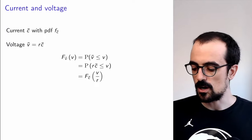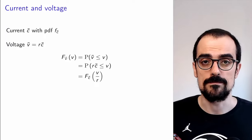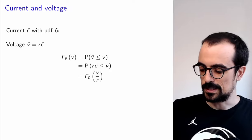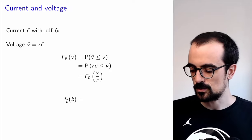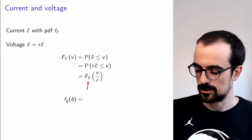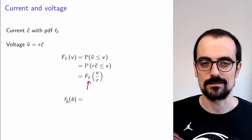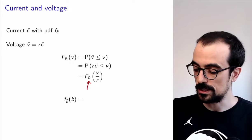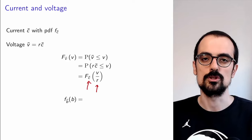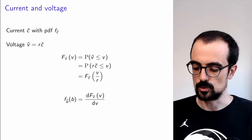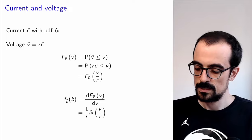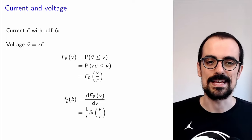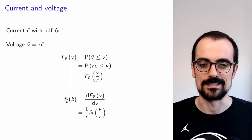Now if we want the PDF of V, what do we do? We differentiate. If we differentiate, we have to apply the chain rule — the derivative of the CDF is just the PDF, and we also differentiate whatever is inside, so a factor of 1/R comes out. And that's the PDF of the voltage across the resistor.